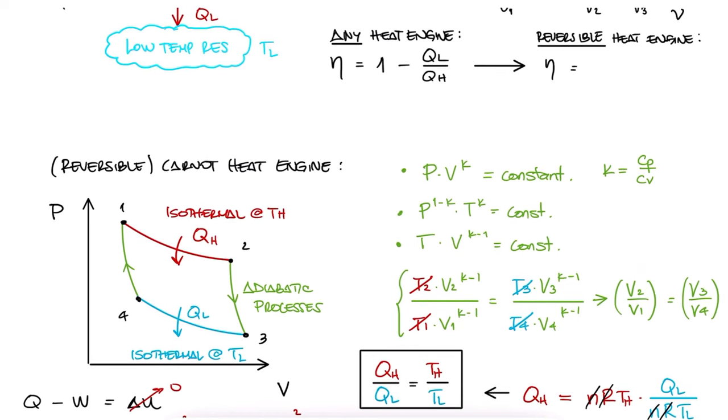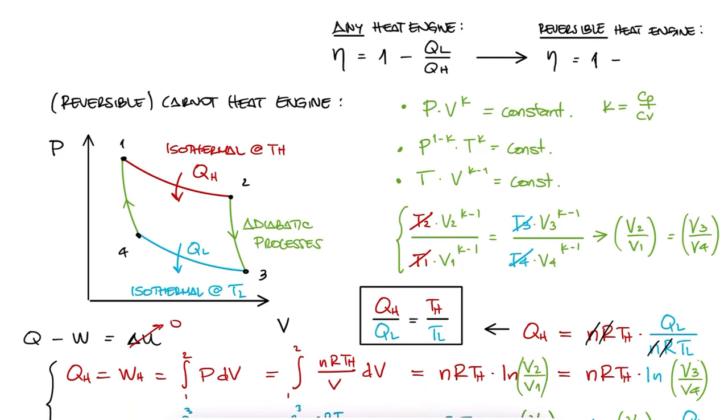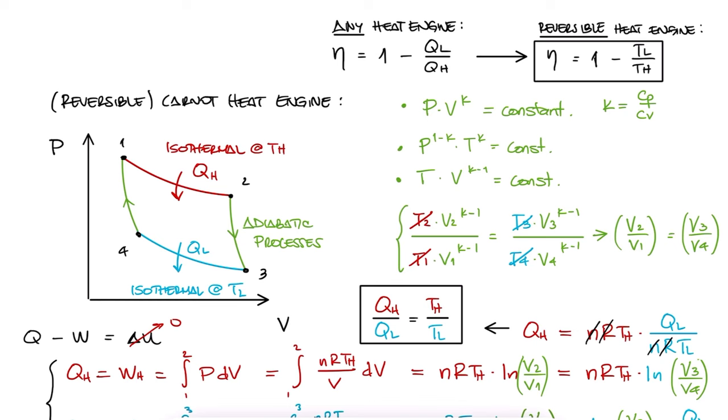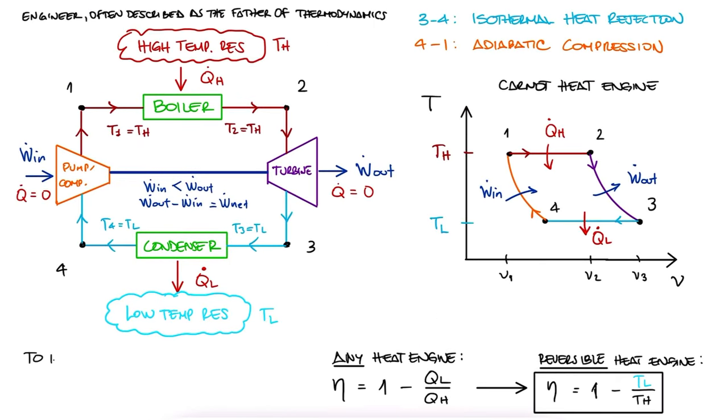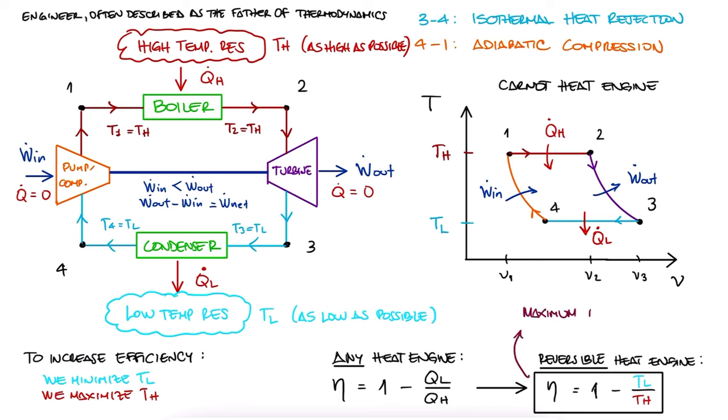And this is what we wanted, the efficiency of the heat engine, at least for a reversible process, is equal to 1 minus TL over TH. This implies that we can increase the efficiency of a cycle if we have a really low temperature for the low temperature reservoir, or a really high temperature for the high temperature reservoir. And additionally, we know that this efficiency is theoretical, and that any real world, non-reversible cycle will have a maximum limit equal to this expression.